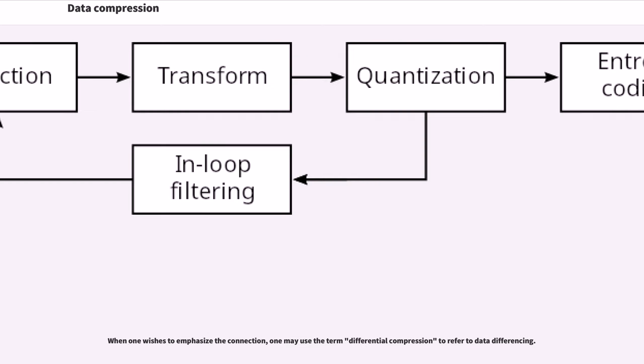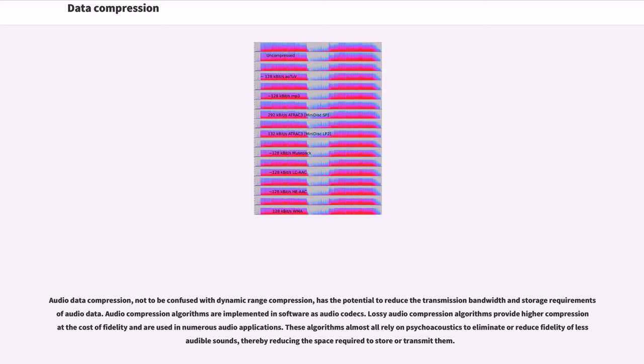When one wishes to emphasize the connection, one may use the term differential compression to refer to data differencing. Audio data compression, not to be confused with dynamic range compression, has the potential to reduce the transmission bandwidth and storage requirements of audio data. Audio compression algorithms are implemented in software as audio codecs.